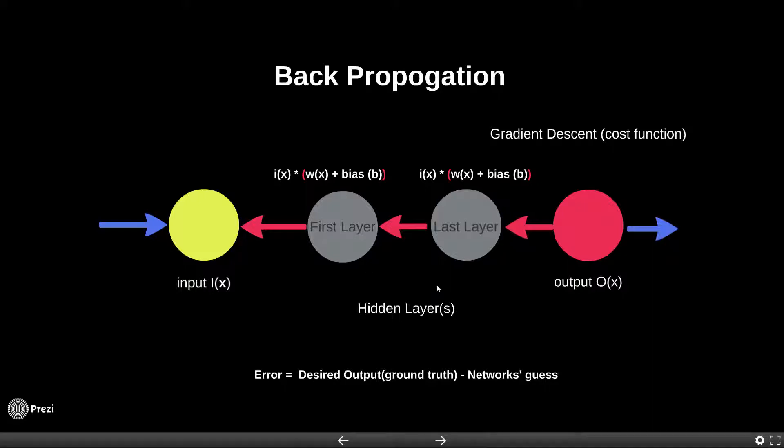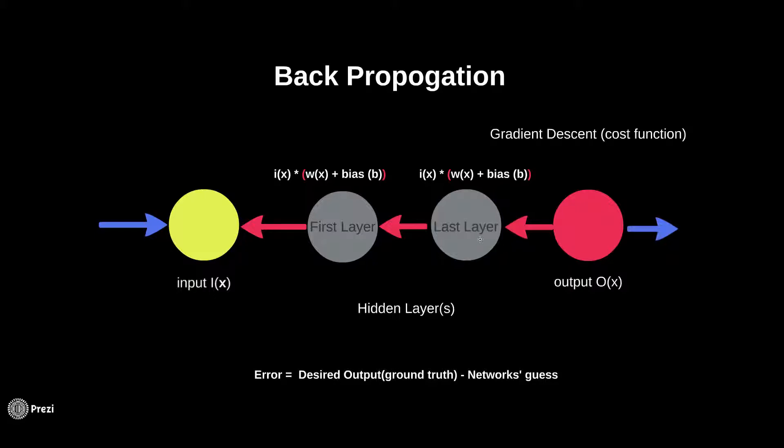In an actual feedforward network, there could be many hidden layers and micro decisions are made in each of these hidden layers. But the layer just before the output node, where the major decisions are made, plays a very significant role in determining the network's overall guess.